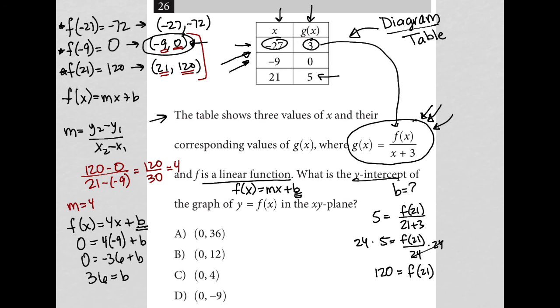So that's it. We found it. 36 is equal to b. Therefore, the answer here is choice a - 0 comma 36 is the y-intercept. Because when x is 0, y is 36. We just found that through this long process. But it wouldn't take you as long as it took me to explain every detail here.